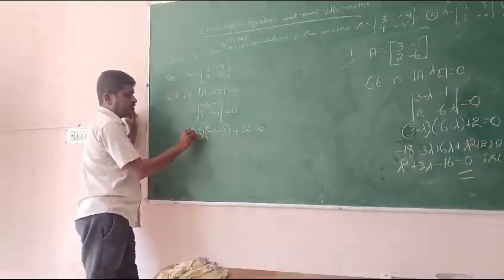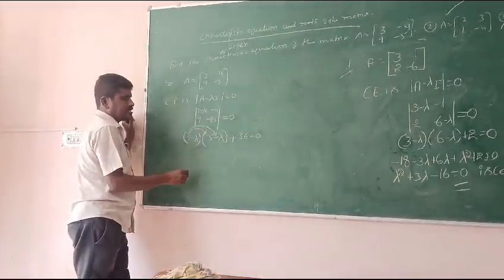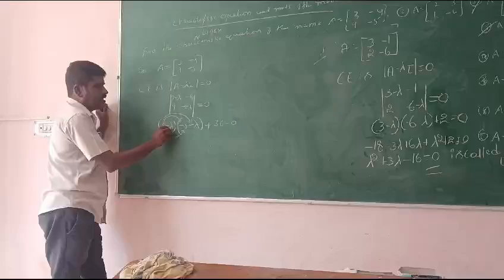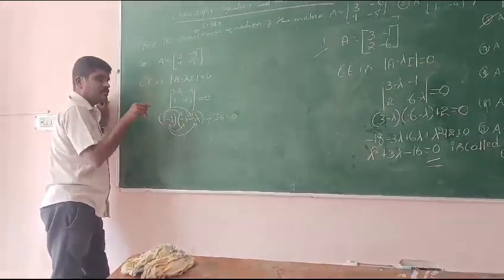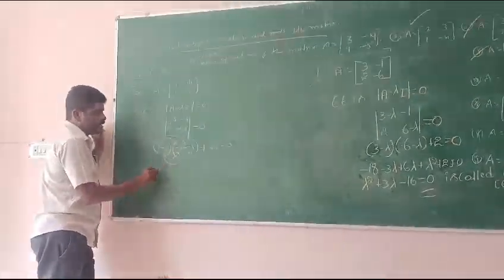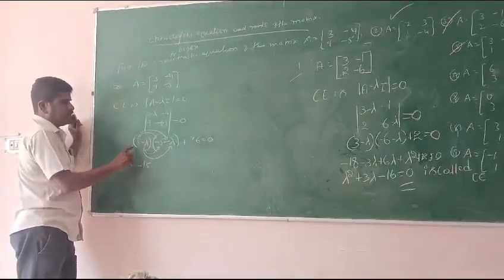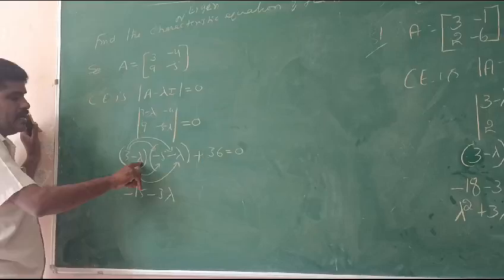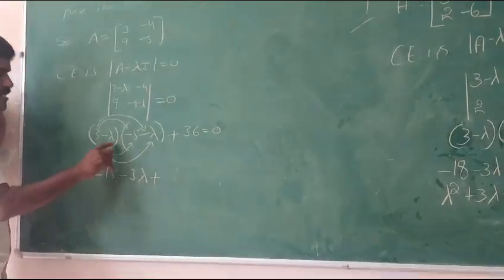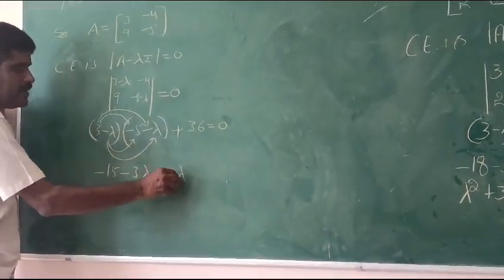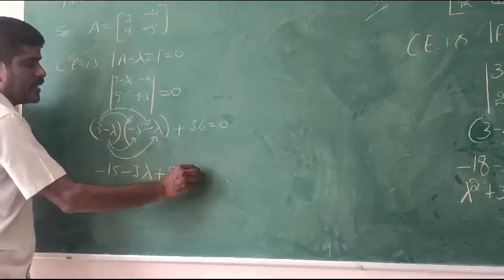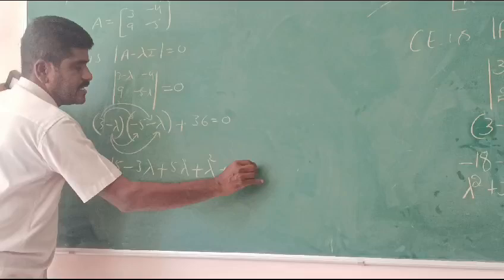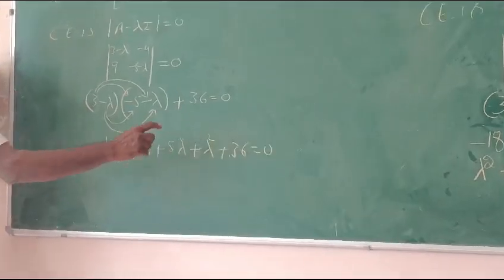Expanding: 3 into minus 5, 3 into minus lambda, minus lambda into minus 5, minus lambda into minus lambda. 3 into minus 5 is minus 15, 3 into minus lambda is minus 3 lambda, minus into minus is plus lambda into 5, so 5 lambda. Minus into minus is plus lambda squared, plus 36 equals 0.